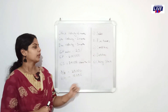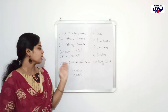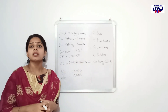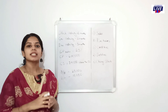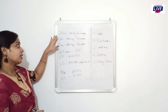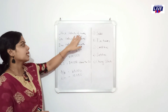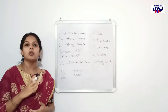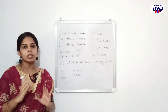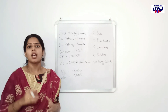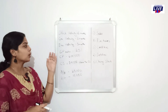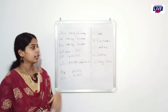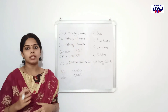The closing stock is 10,000 above the opening stock, but we don't have the opening stock. Stock velocity is 6 months. Stock velocity is 12 or 365. In months, we can use 12. In days, we can use 365. We can use 12 months, so it's 12.